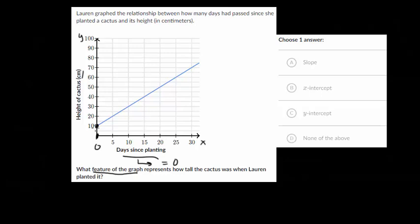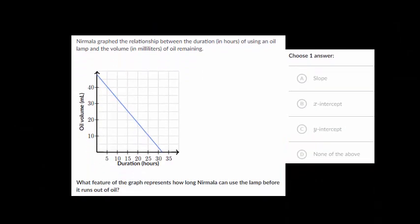And again, we're dealing with this intercept here because it's crossing this y axis. So this is our y intercept. And so that is the feature of the graph that represents how tall the cactus was when it was first planted. Now moving on to another problem.